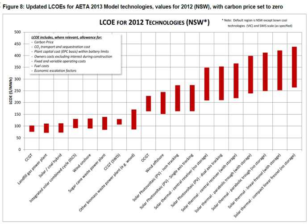Coal has the highest external cost in the EU, and global warming is the largest part of that cost. A means to address a part of the external costs of fossil fuel generation is carbon pricing — the method most favoured by economics for reducing global warming emissions. Carbon pricing charges those who emit carbon dioxide for their emissions. That charge, called a 'carbon price', is the amount that must be paid for the right to emit one tonne of CO₂ into the atmosphere. Carbon pricing usually takes the form of a carbon tax or a requirement to purchase permits to emit.